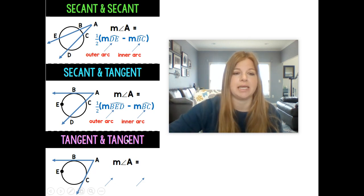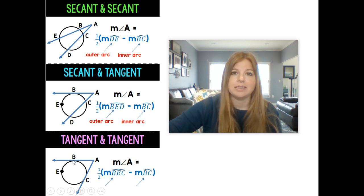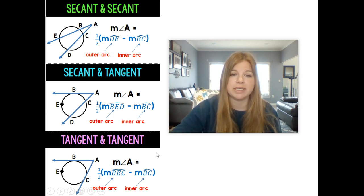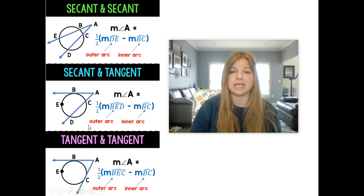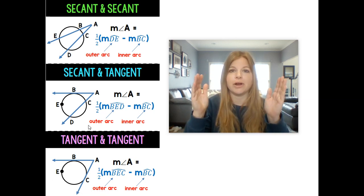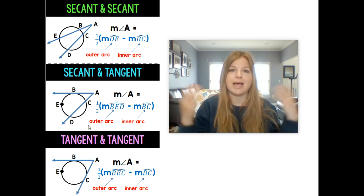If I have two tangents intersecting on the outside of a circle to find angle A, it would be the outer arc, so one half times the measure of arc BEC minus the measure of arc BC. So again, outer arc minus the inner arc. For each one of these, to find that angle on the outside, it's the outer arc minus the inner arc, and then you take one half of that value, and you have your answer.